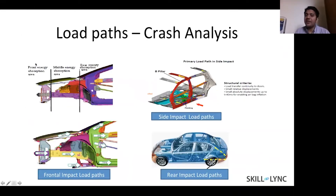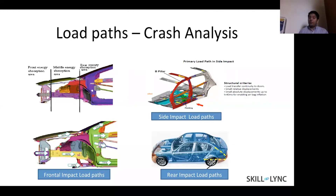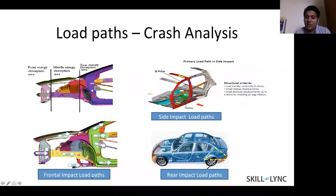The next thing we're going to talk about is the load path, which is extremely important. The load path helps us channelize energy away from the passenger. For example, looking at frontal impact load paths, you can divide the car into three zones: a front energy absorption area, a middle energy absorption area, and a rear energy absorption area.